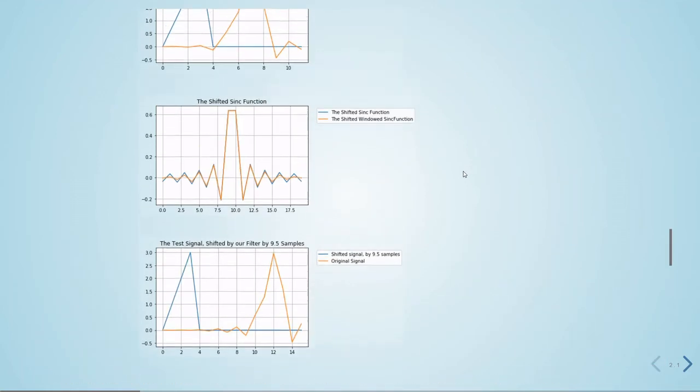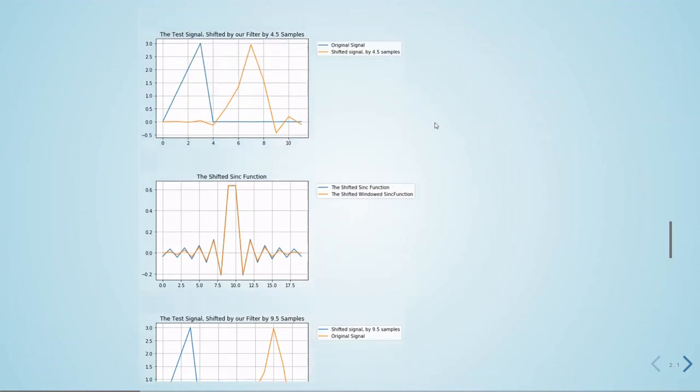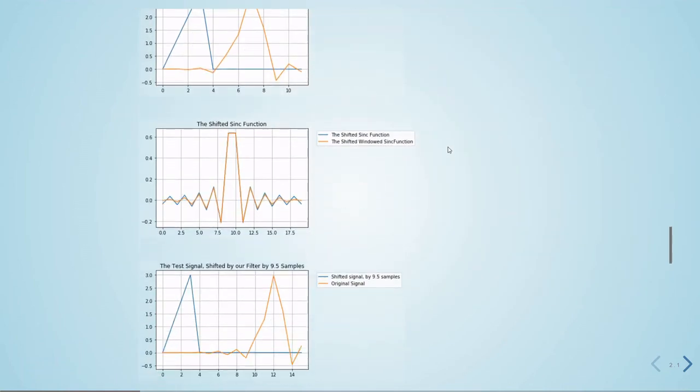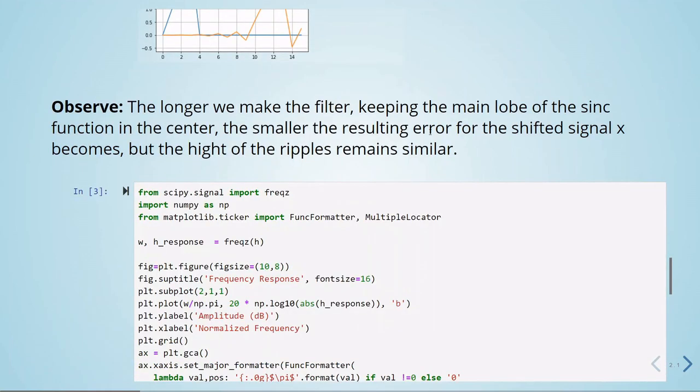So this is what we can see. This is what we see here, just this shifted sinc function by n0. And we also have the windowed, shifted windowed sinc function. That was the impulse response we used to filter our test signal. And we got this final result here.